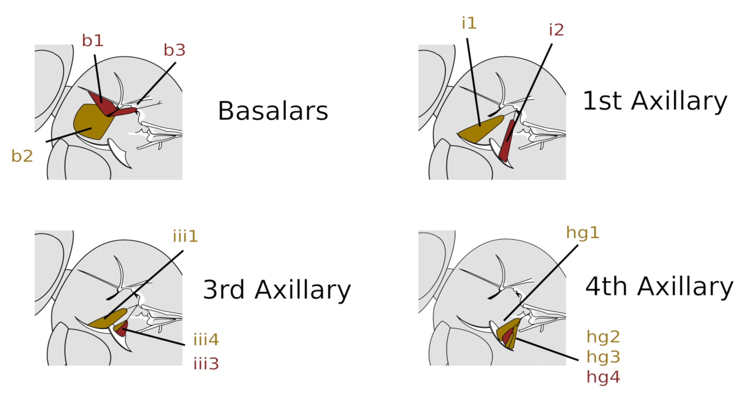Notably, we found that each of the four sclerites at the base of the wing was equipped with at least one tonic muscle and at least one phasic muscle, suggesting a functional division of labor in the control of wing motion.